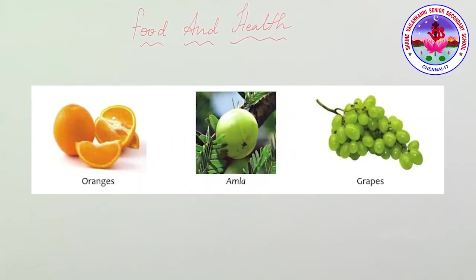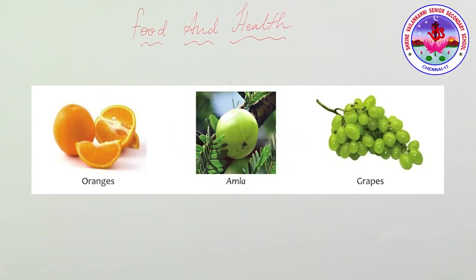If food has a deficiency of vitamin C, scurvy disease will be caused. This causes bleeding and swelling of the gums, loose teeth, pain in the joints, and red spots under the skin. The gums get easily infected. Eating foods like orange, grapes, and lemon will help increase vitamin C in our body.